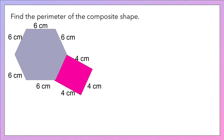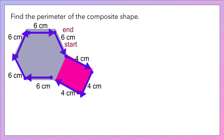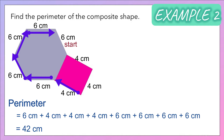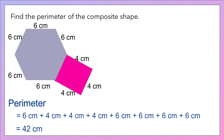Now look at Example 2 — we have a hexagon and a square. Determine one side as a starting point, then add up the sides from the starting point: 6 cm + 4 cm + 4 cm + 4 cm + 4 cm + 6 cm + 6 cm + 6 cm. The answer will be 42 centimeters.